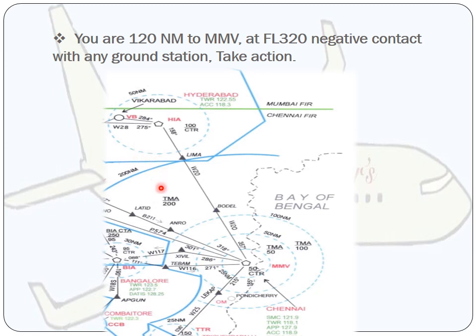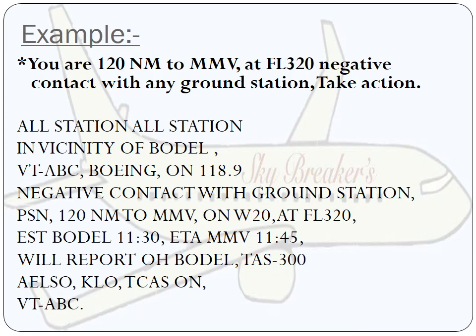Let's look at the charts. The aircraft is going from Hyderabad to Chennai, following Whiskey 20, which is an ATC route. The vertical and horizontal position of the aircraft is: 120 nautical miles to Mike Mike Victor at flight level 320. This dotted circle represents about 100 nautical miles, and the aircraft may be somewhere in this position, inbound to Chennai — Mike Mike Victor.